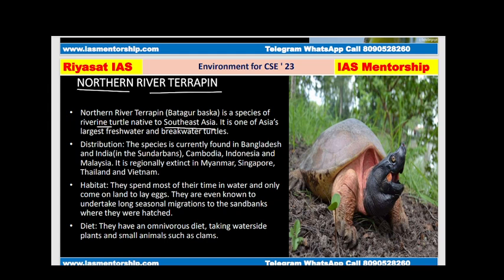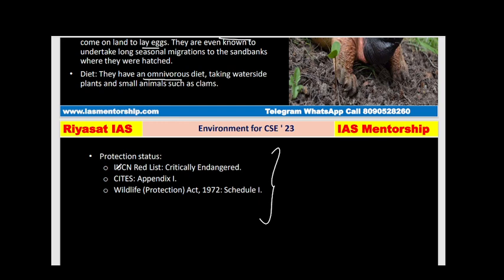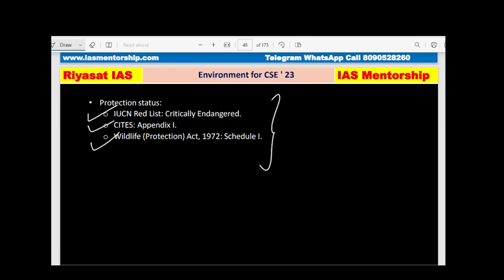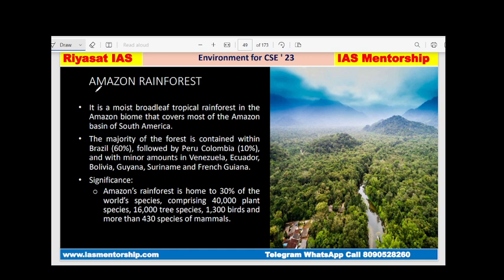The Northern River Terrapin is a riverine turtle native to Southeast Asia and one of Asia's largest freshwater and brackish water turtles. It is found in Bangladesh, India, Cambodia, Indonesia, and Malaysia. It is regionally extinct in Myanmar, Singapore, Thailand, and Vietnam. It spends most of its time in water, coming to ground only to lay eggs. Diet: omnivorous. Protection status: Critically Endangered, Appendix 1, and Schedule 1.